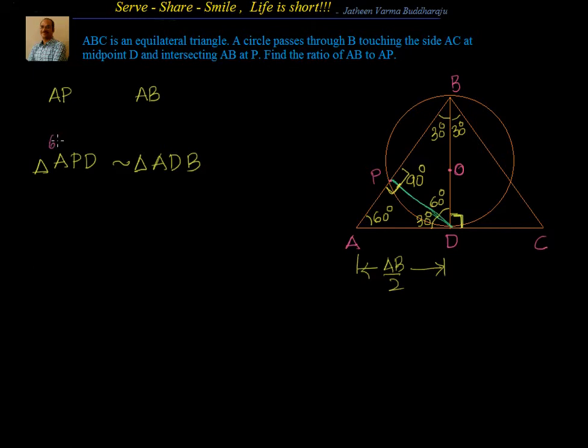APD is always 60, 90 and 30. Same case with ADB, you can see that angle A is 60 common angle and we have a 90 degrees. Then angle D is 90 degrees and angle B is 30 degrees.